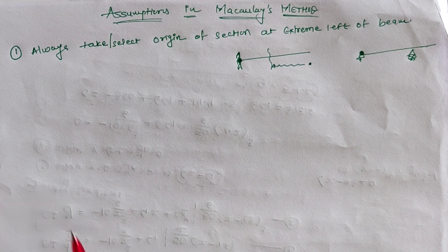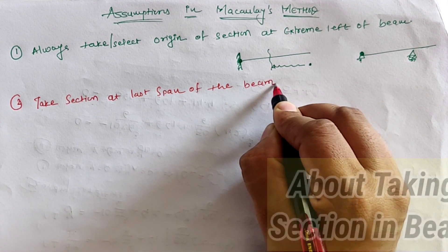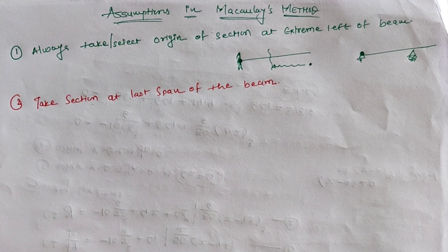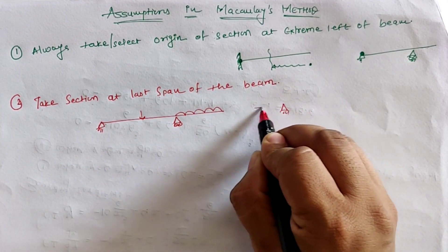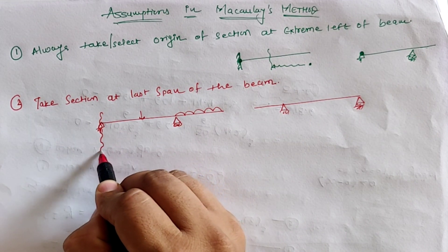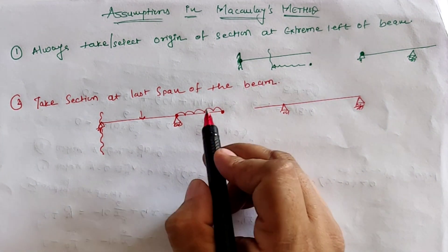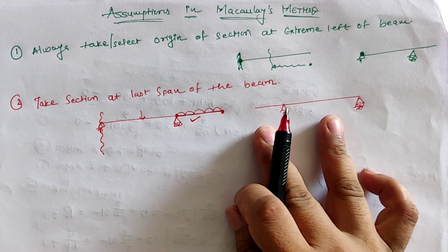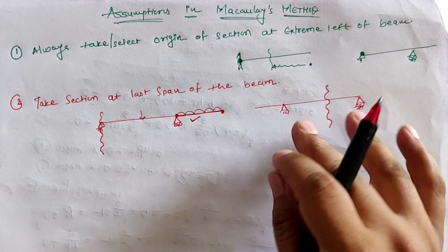The second assumption is that we have to take a section at the last span of the beam. For example, if we select an origin at the left-hand side, then the last span is at the end of the beam, and our section must be in this span. For an overhang beam, the last span is in between the simply supported portion, and our section is placed between these two supports.